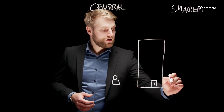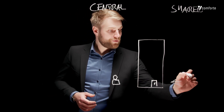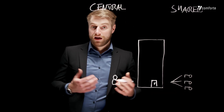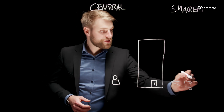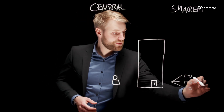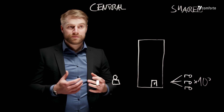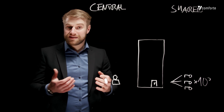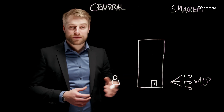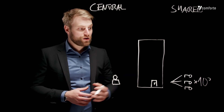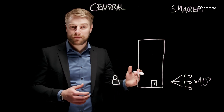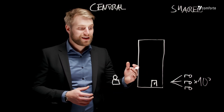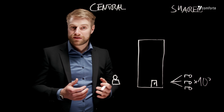In a shared access model we would distribute keys to everyone who needs to get access to the building, and in a large building or a large enterprise this can easily be hundreds of thousands of individuals. With a central access model, access control and auditing can be easily enforced, whereas in a shared access model it's fairly hard to do because you have all those keys and you don't know what happens with them, if they are shared even if you don't want it, or if somebody gets access at a time or place that you don't want.